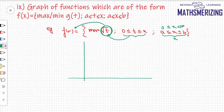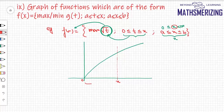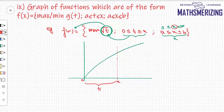Let us take a = 0 and b = ∞. I'll draw the graph of √t. The definition says at any point between 0 and ∞, I choose a point x, so t lies between 0 and x. In this interval I need to find the maximum value of √t. Since √t is an increasing function in this interval, its maximum value will be at the end of the interval.